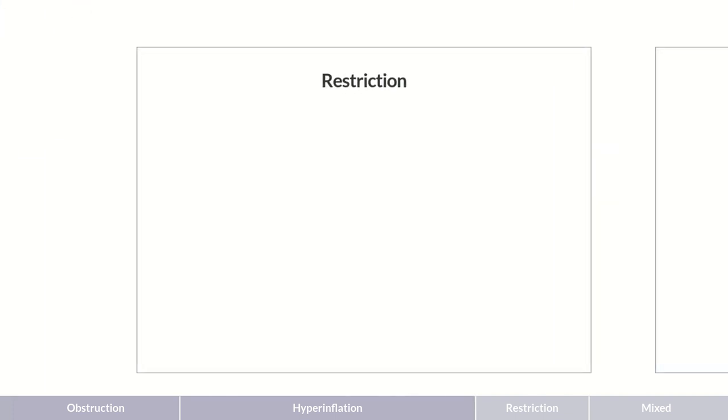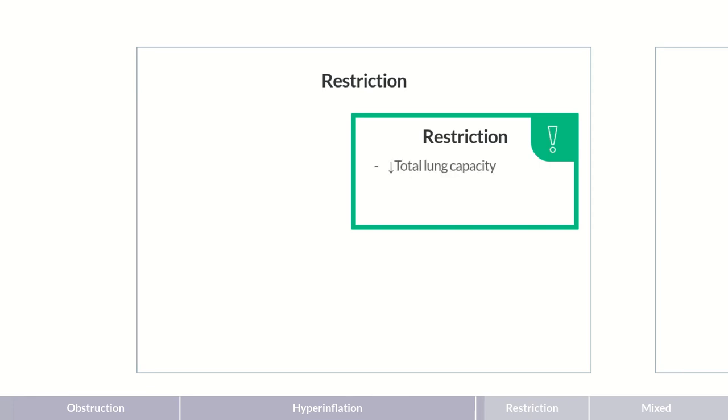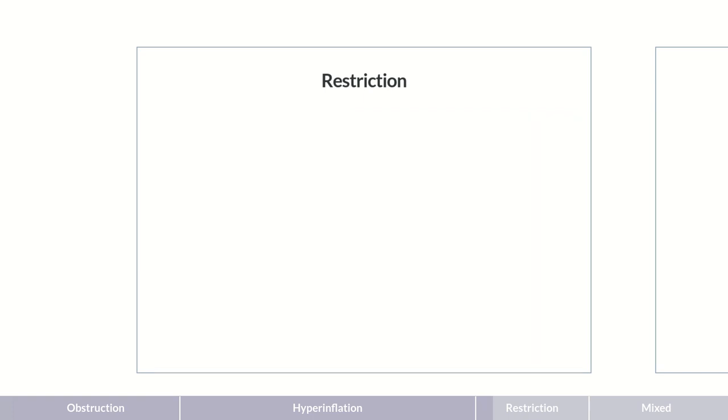Now, let's move on to restrictive lung diseases. Here, primarily lung expansion is limited, which reduces the lung volume. As a result, the total lung capacity and vital capacity decrease, while the FEV1 to FVC ratio remains normal. So, in restriction, there's an absolute reduction in volume.